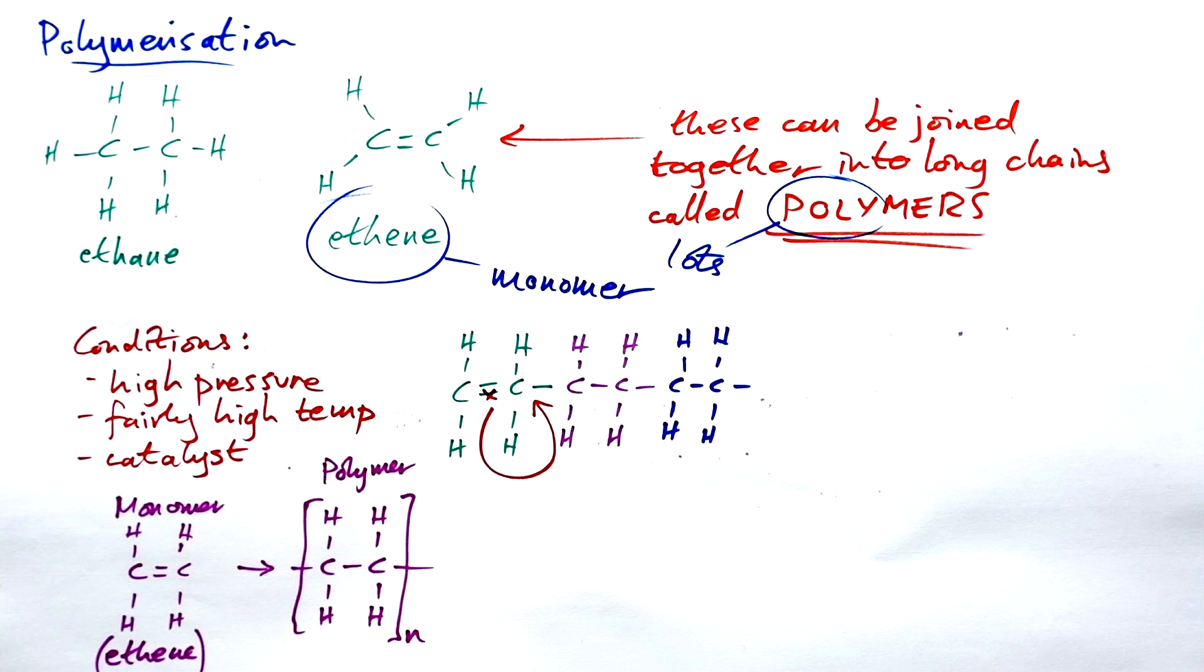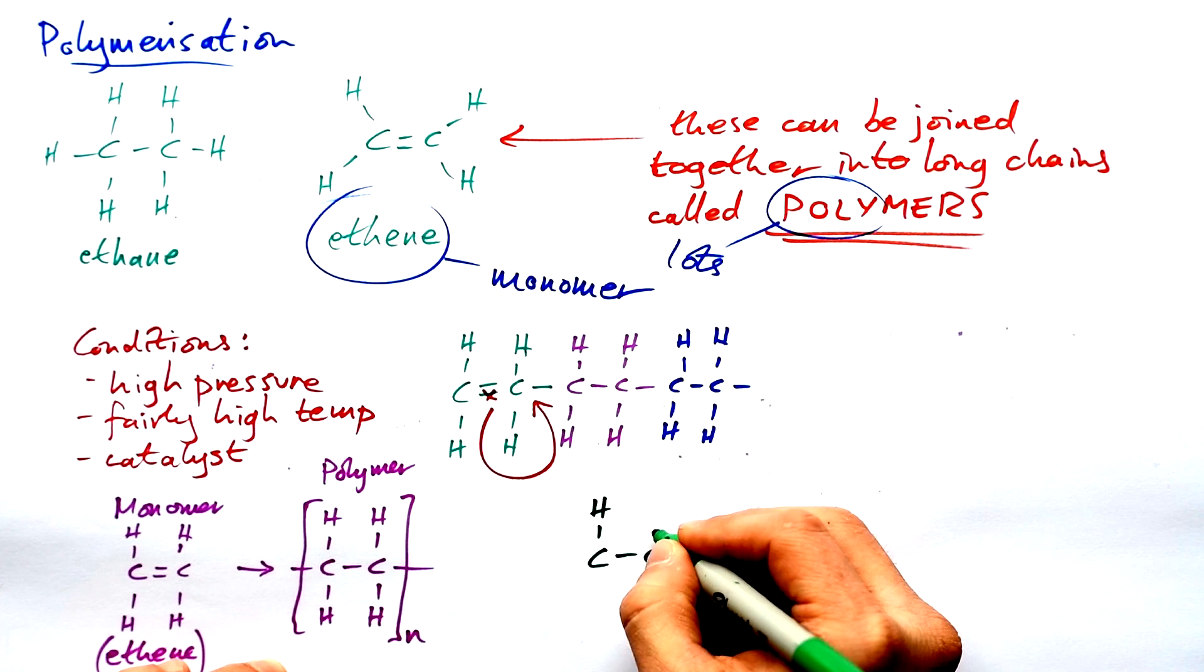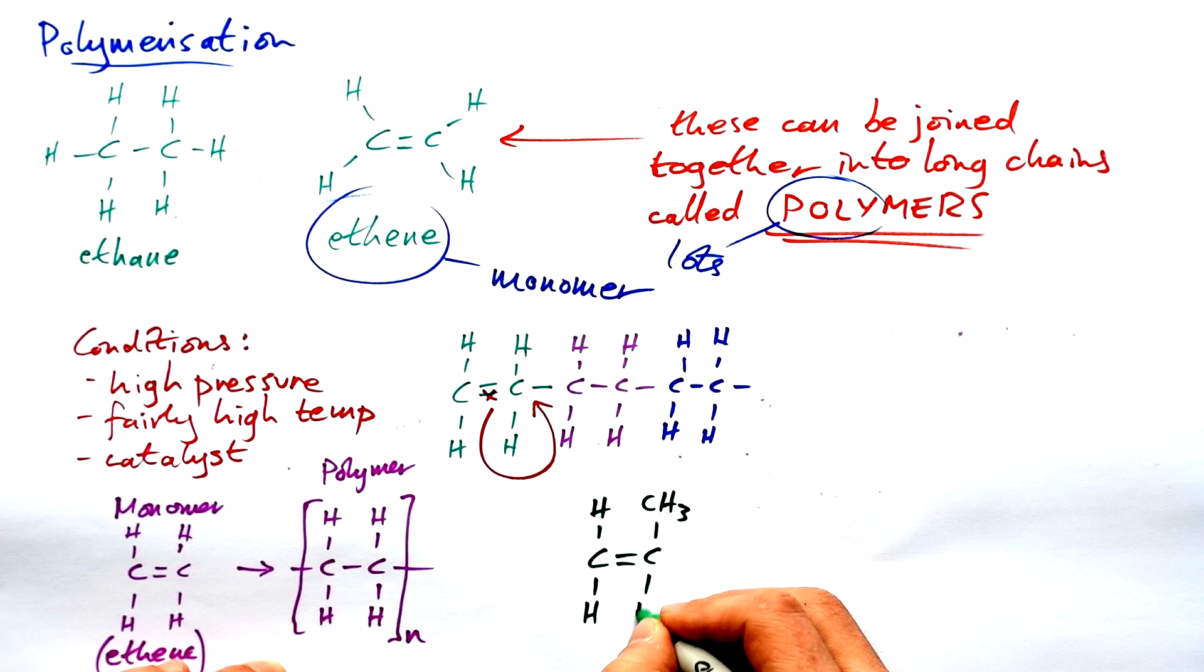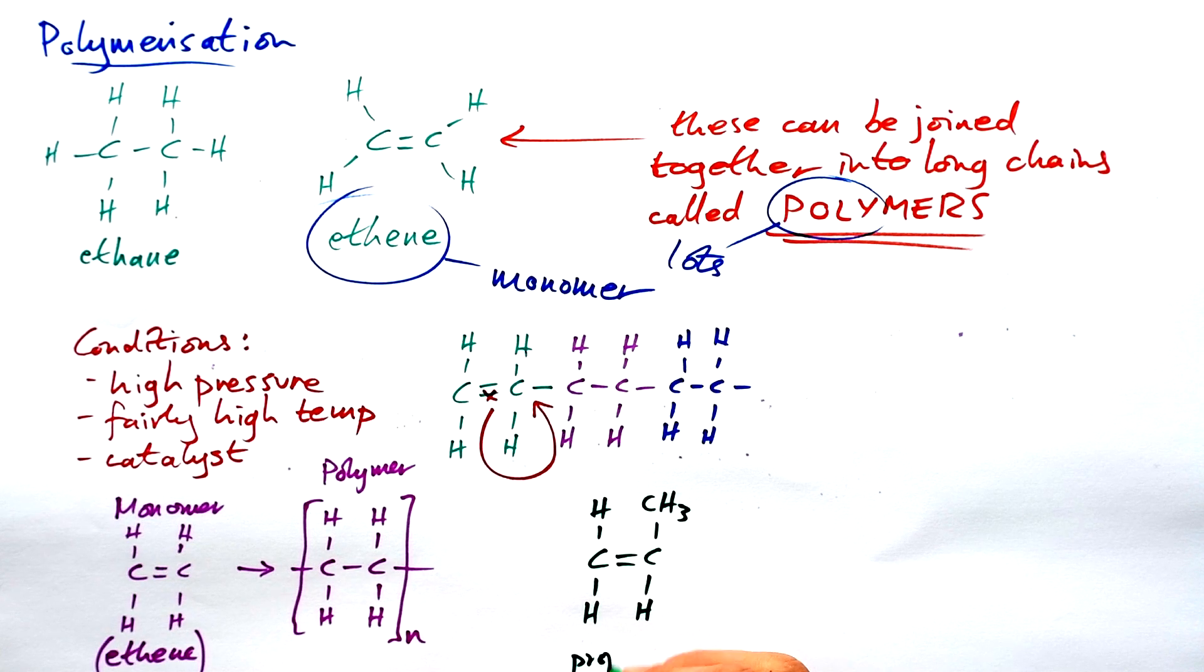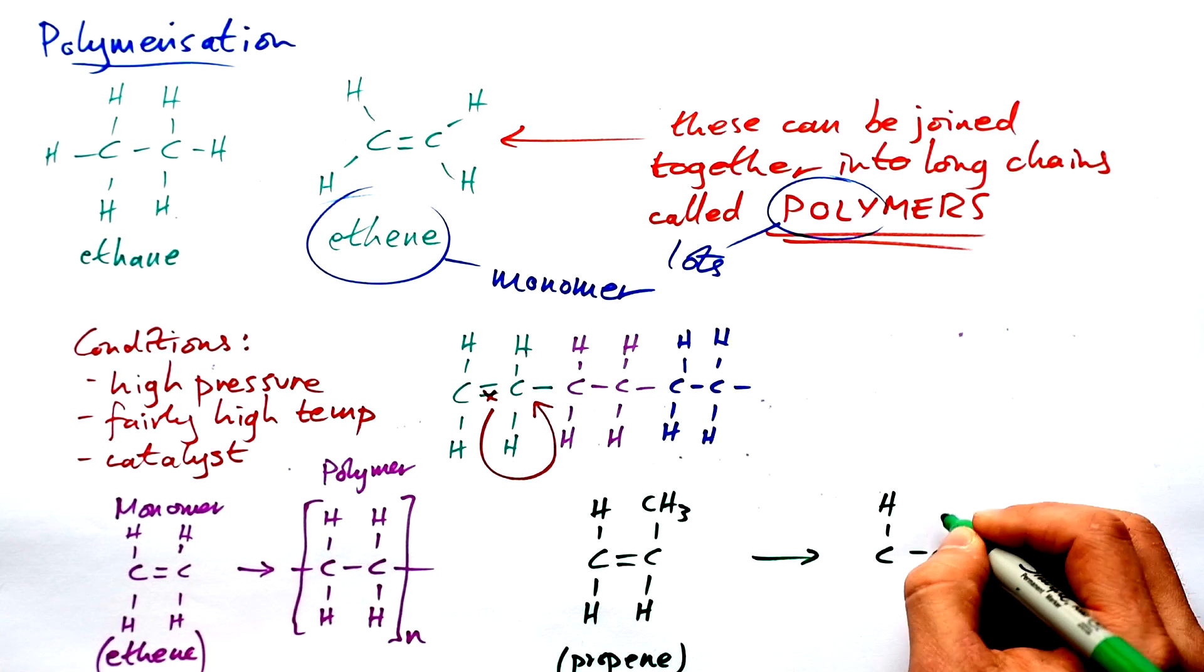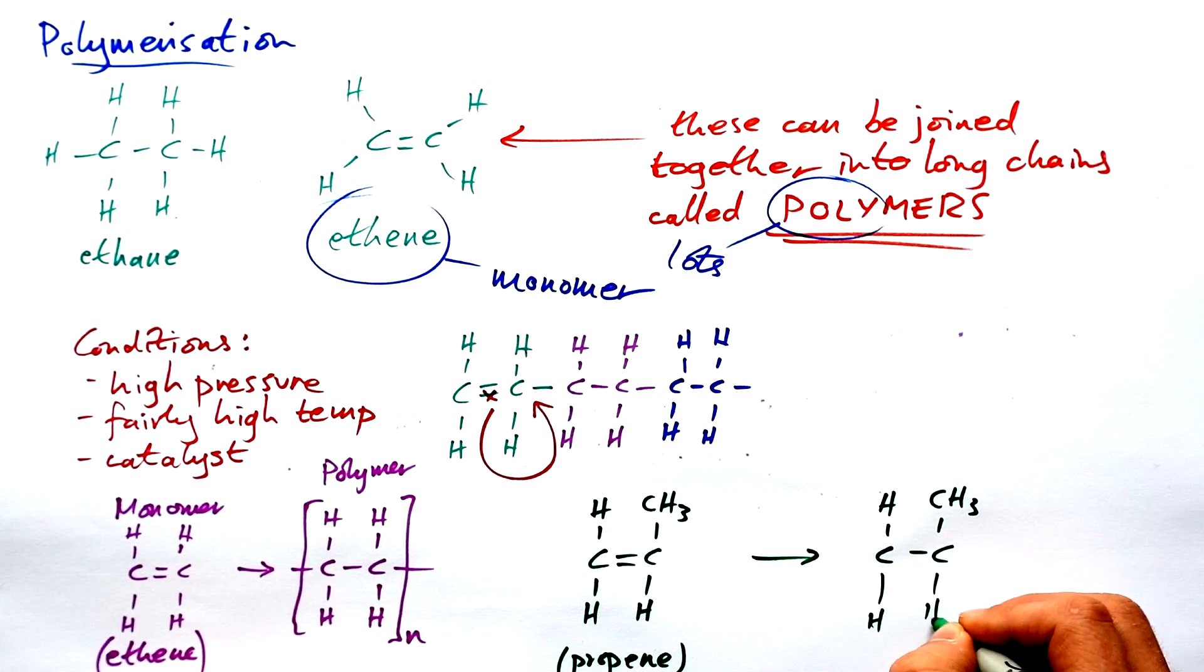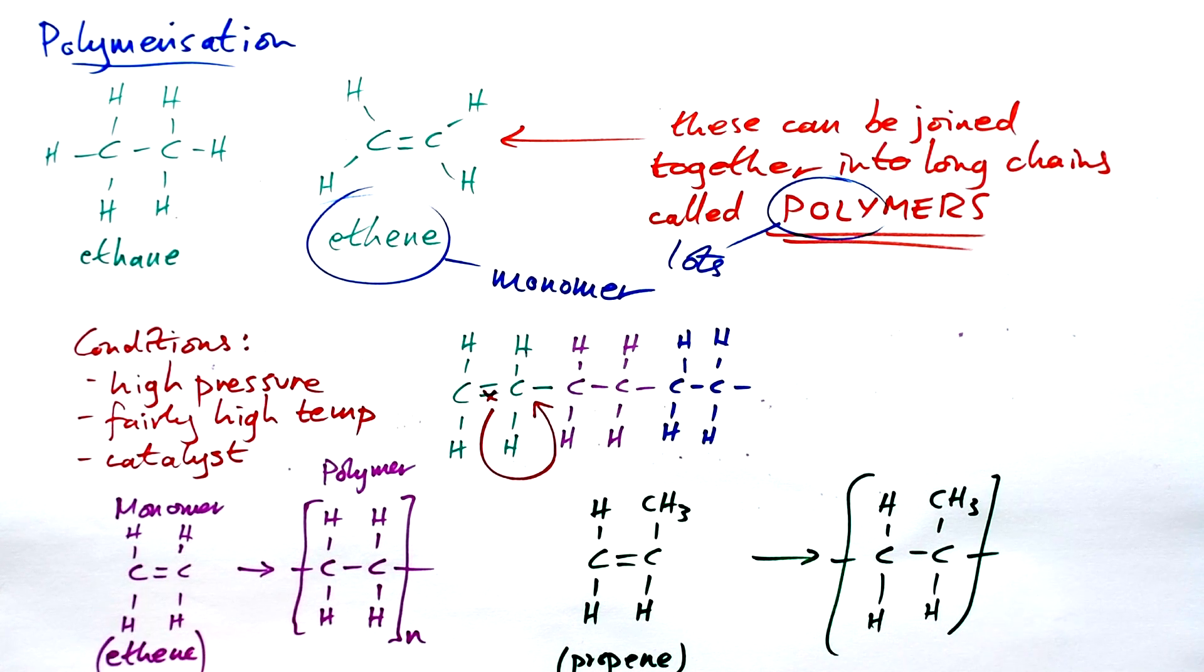People can get very confused when it comes to drawing the polymer version of a monomer. This has come up before in a question. Instead of ethene, this is actually propene. But they draw it like this for a reason. If we want to draw the polymer of this, all we have to do is get rid of the double bond, draw everything else exactly the same, add brackets, bonds coming out, and then an n on the outside. Easy.